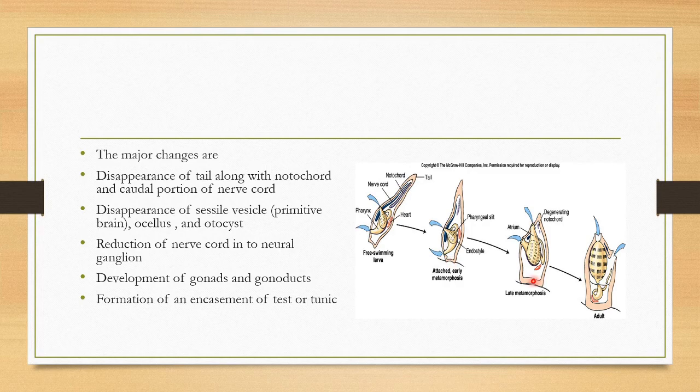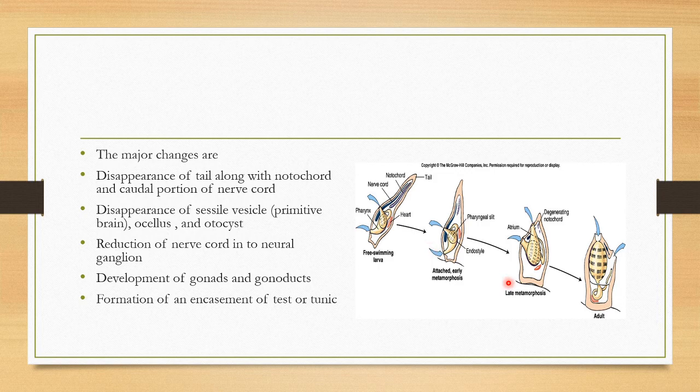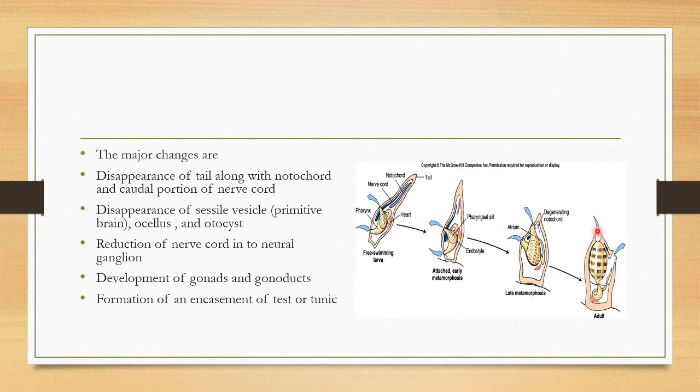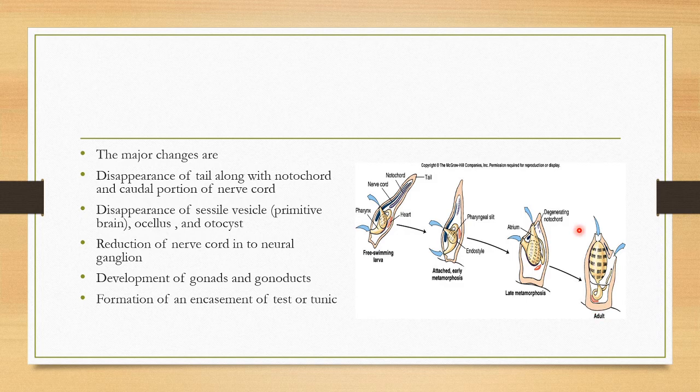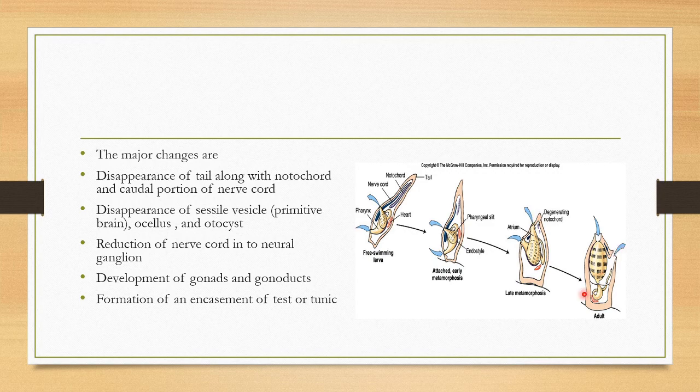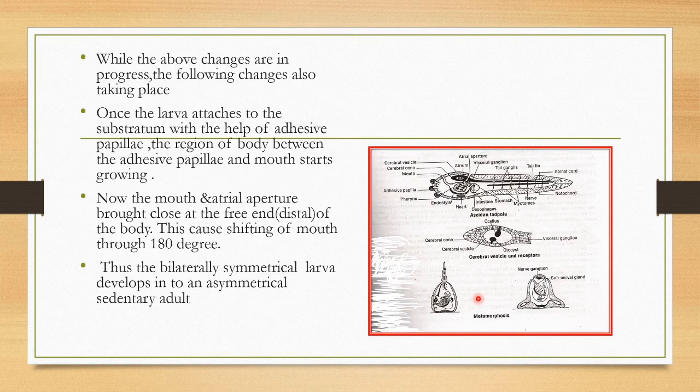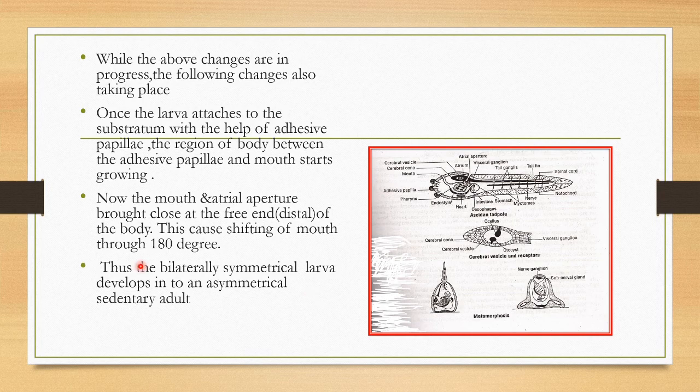Now as it proceeds during the metamorphosis, this mouth gradually moves upwards. Now it reaches here. When it goes to this picture, it moves to the upper side. So there will be a shift, a 180-degree movement from lower to the upper region. So this shifting of mouth and atrial segment happens during the metamorphosis.